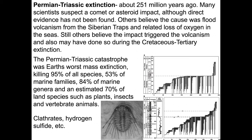Now the Permo-Triassic extinction is the big one — by far the largest mass extinction we have characterized. About 251 million years ago, we suspect a comet or asteroid was the culprit, though that's unlikely anymore. Other people believe the cause was flood volcanism from the Siberian Traps — very, very large volcanic deposits — and the related loss of oxygen in the oceans. Others believe the impact triggered the volcanism, and may have also done so during the KPG extinction.